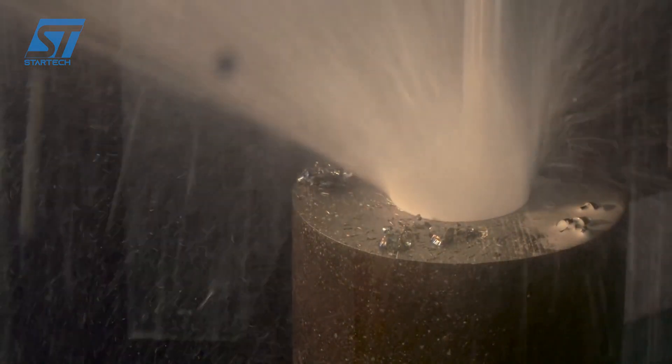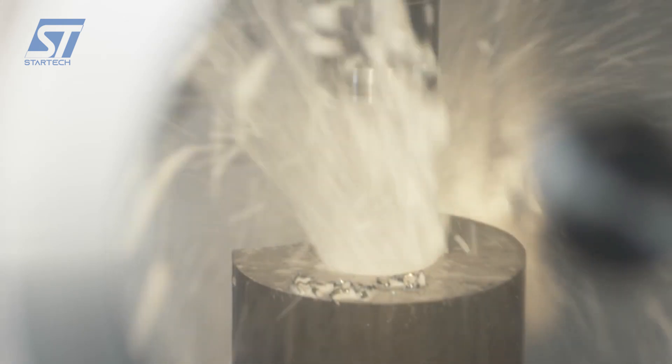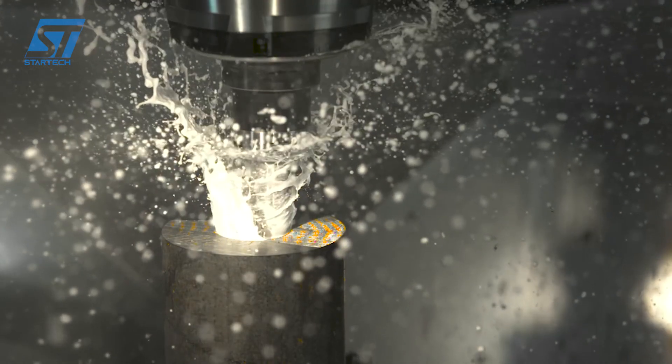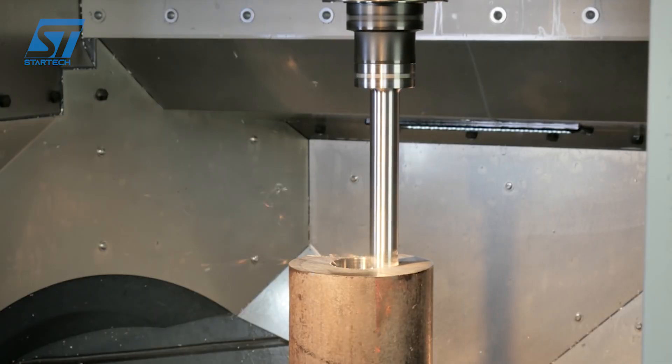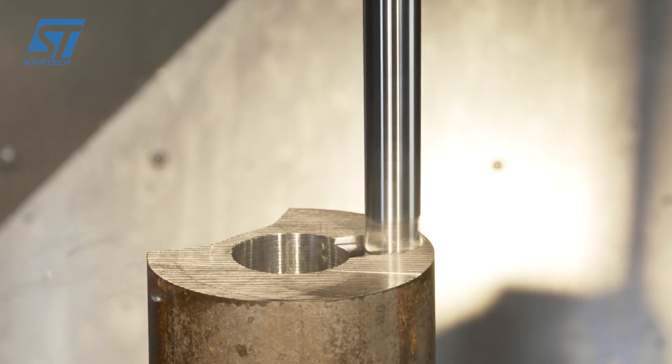In milling, especially with long overhangs or when machining tough materials, vibrations can arise. These vibrations can lead to poor surface finish, reduced tool life, and lower machining accuracy. Silent Tools technology is designed to counteract these vibrations.